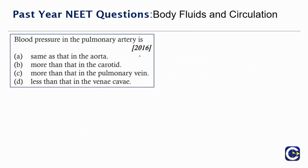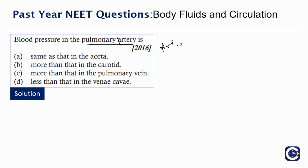The next question: blood pressure in pulmonary artery. Options given are: same as that in the aorta, more than that in the carotid, more than that in the pulmonary vein, or less than that in the venacava. As a generalized fact, artery always has more pressure than vein.